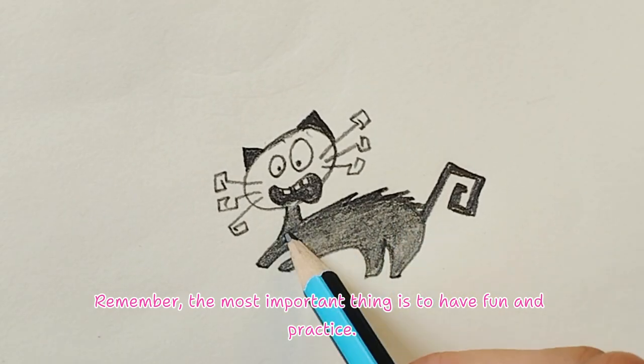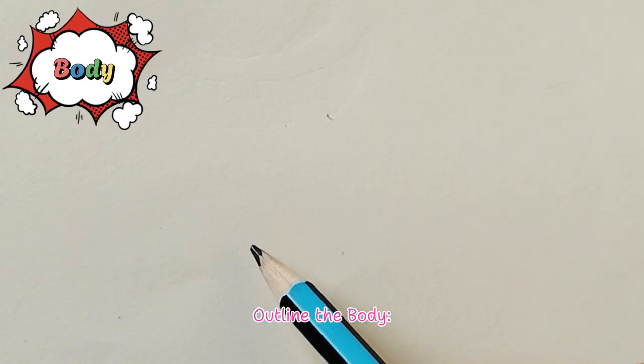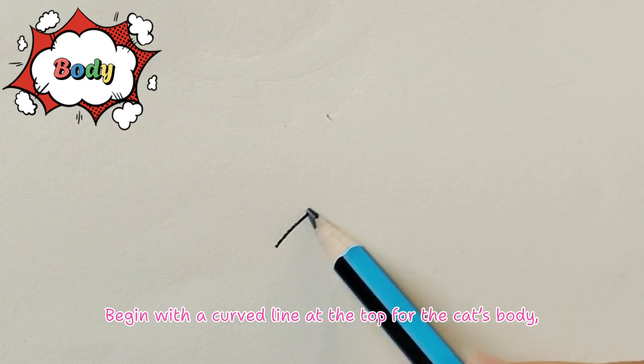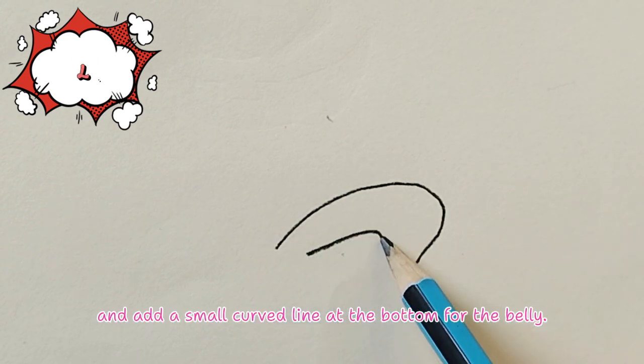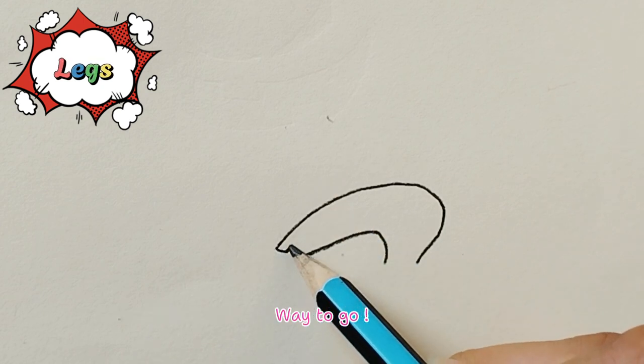Outline the body. Begin with a curved line at the top for the cat's body, and add a small curved line at the bottom for the belly. Way to go!